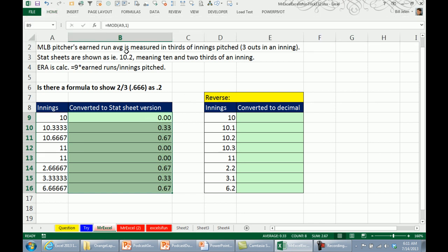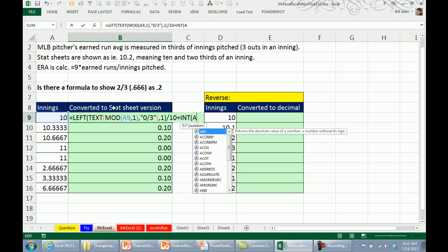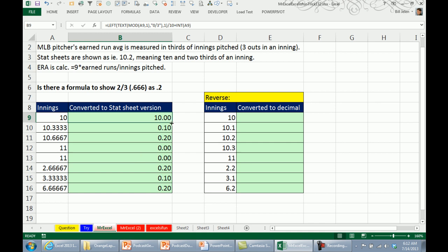So we have our MOD there, I'm going to use the TEXT function to take that answer and show it in a fractional 0 divided by 3, custom number format, which gets me the fractions of 0 thirds, 1 third, 2 thirds, but we don't need the divided by 3, so I'm going to use the LEFT of that comma 1. That gets me the portion that should appear after the decimal place and so we will divide by 10, which gets us the 0.1, 0.2 and so on and then finally we just have to add back in the original number, the integer of that A9 and copy it down.